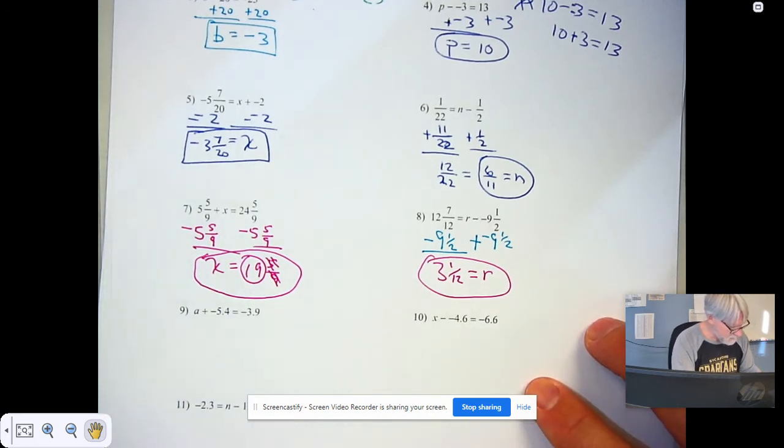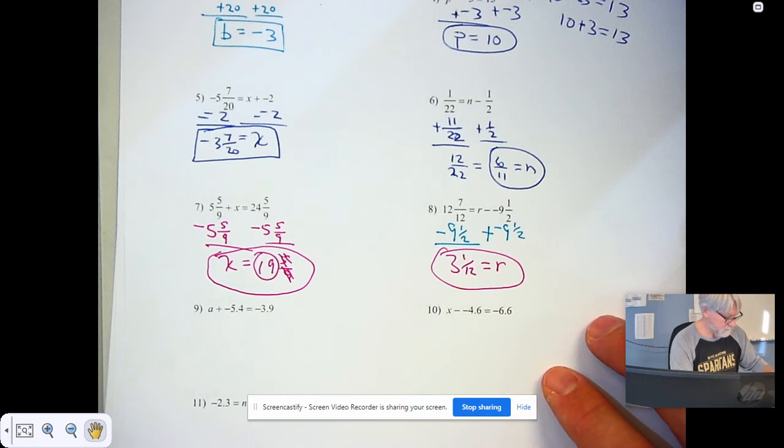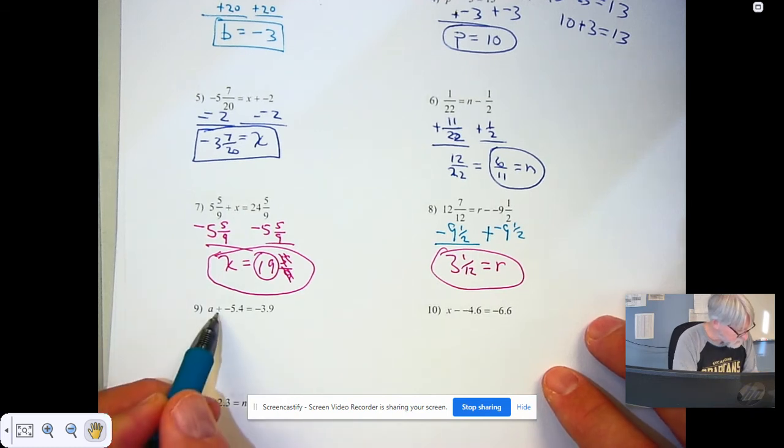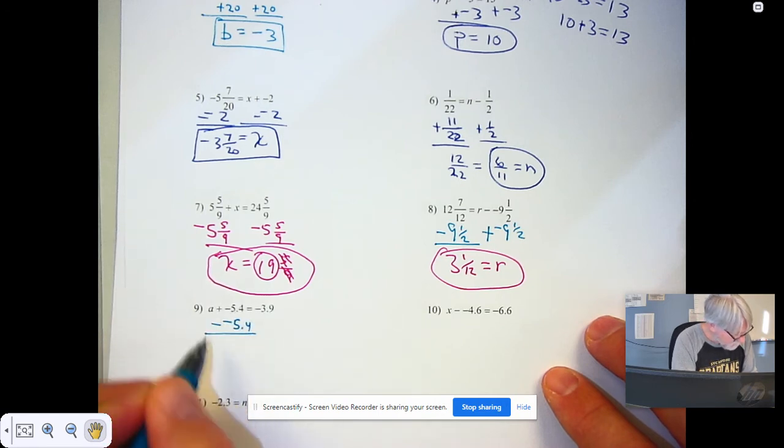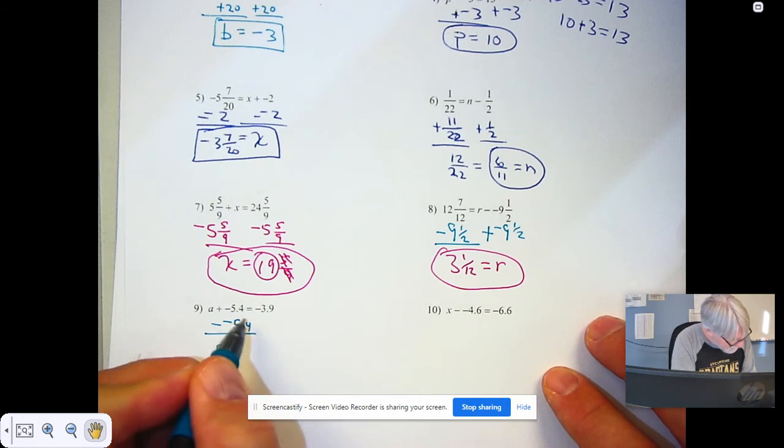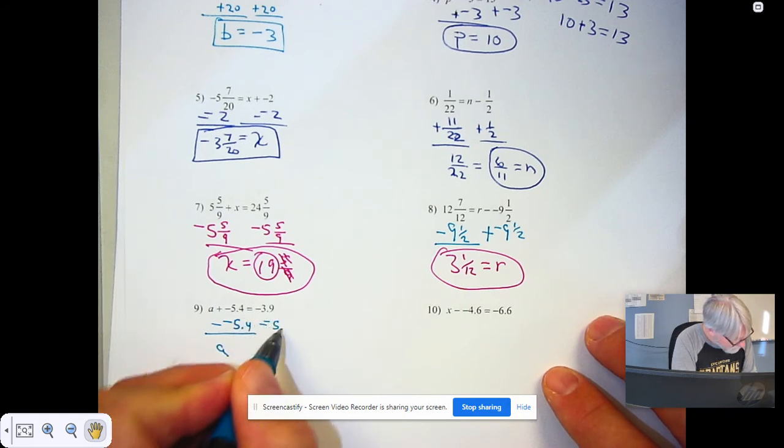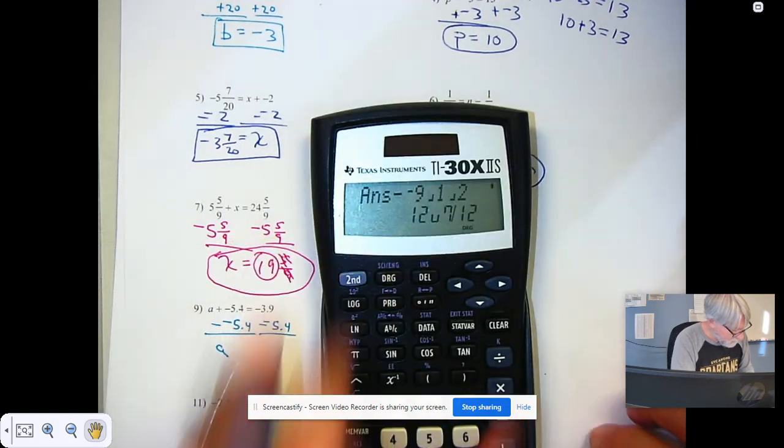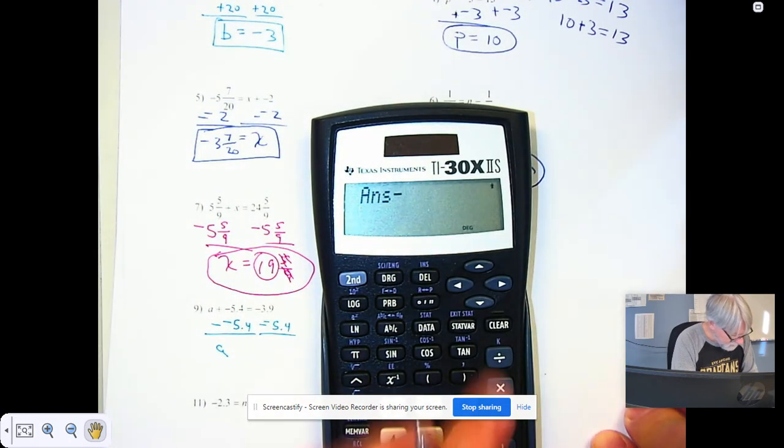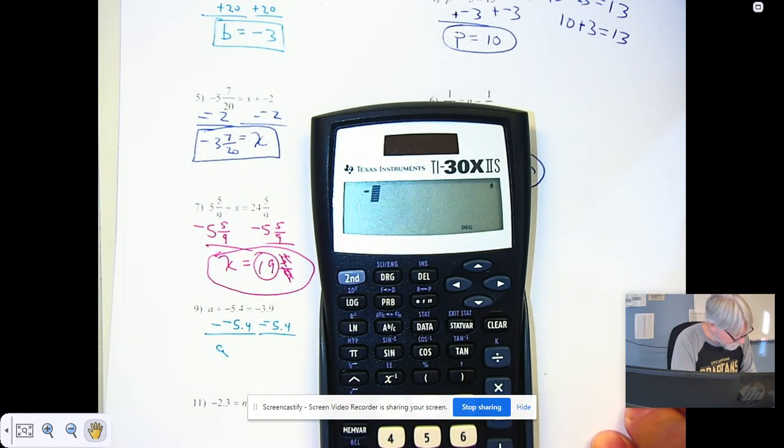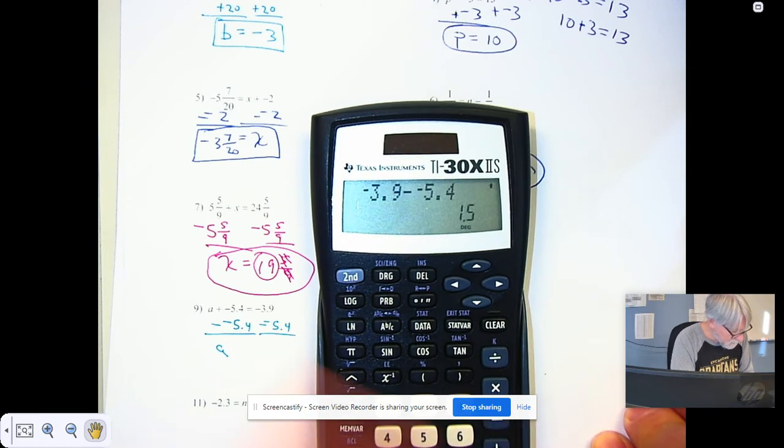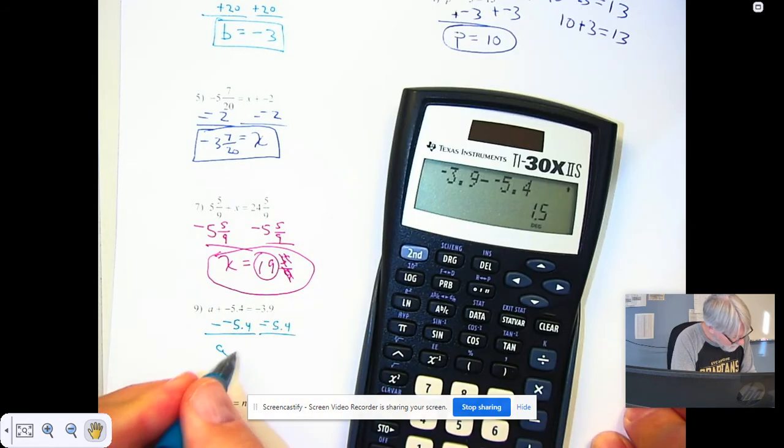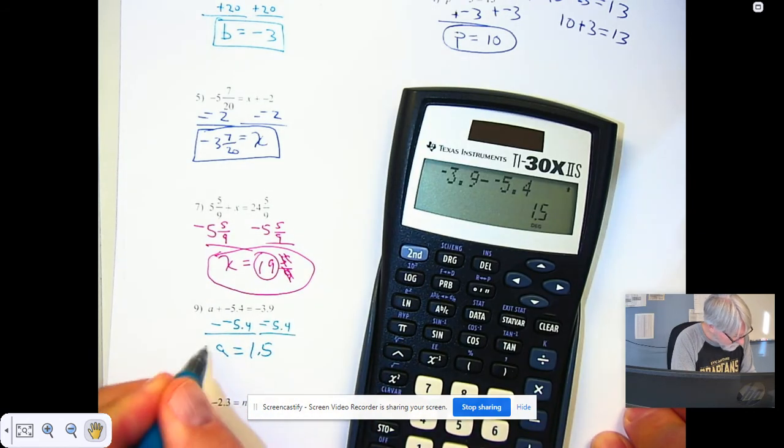Decimals work the very same way. Instead of adding, subtract. Subtract a negative 5.4 and I'll get a. Subtract a negative 5.4, I get negative 3.9. Check that: negative 3.9 minus negative 5.4, and I get positive 1.5.